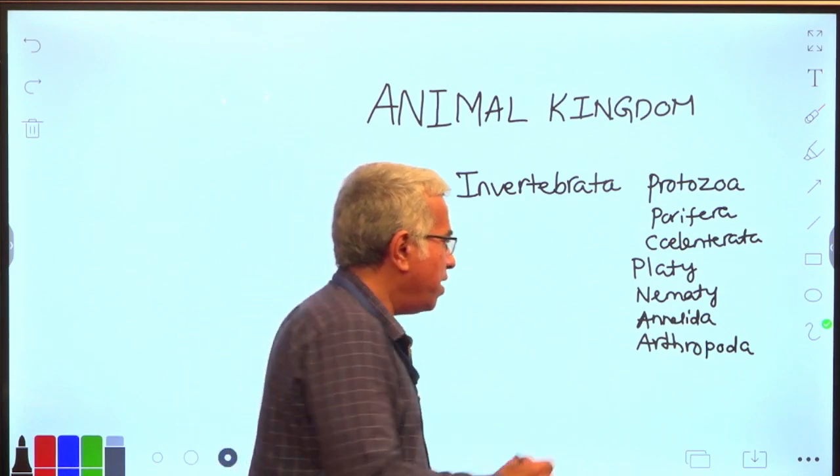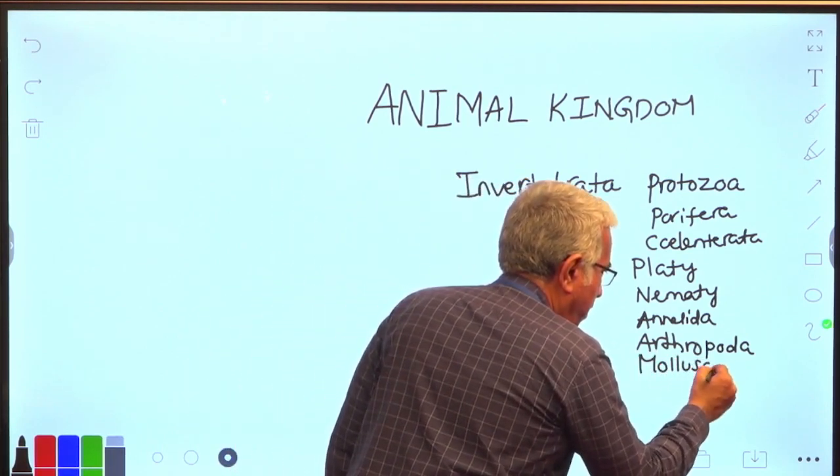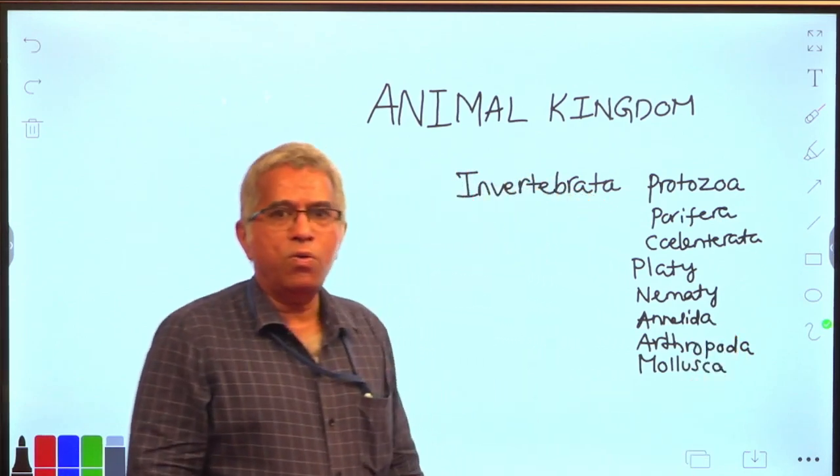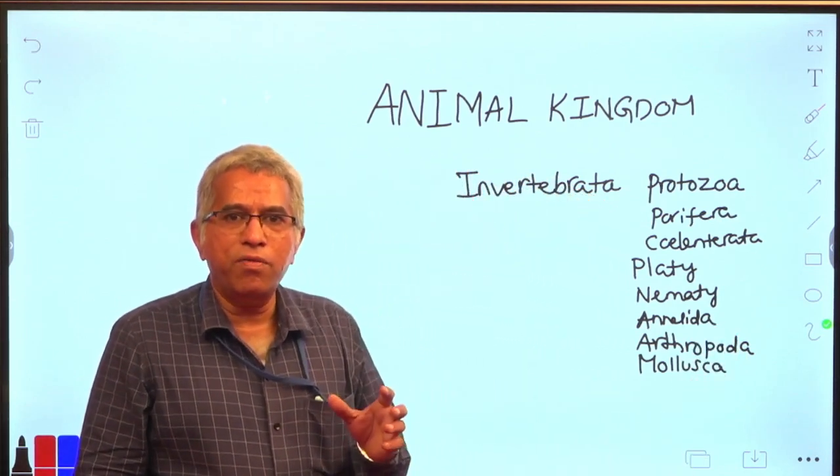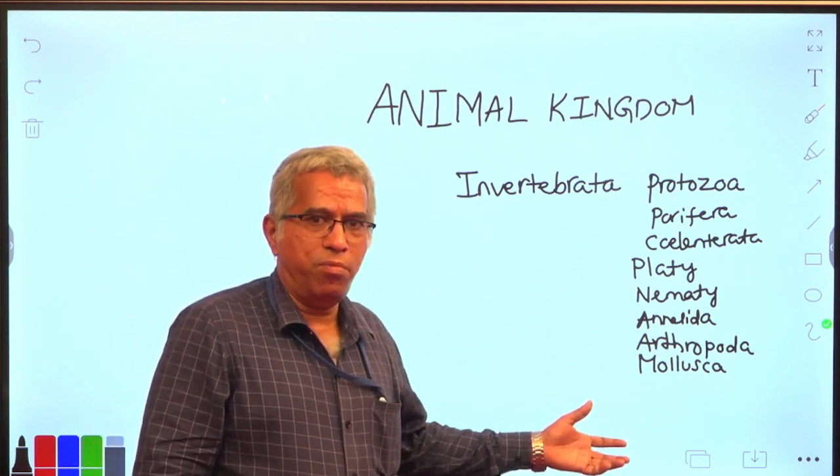Arthropoda is followed by mollusca. Mollusca includes organisms that are covered with shell. For example, snail is the best example of this mollusca.